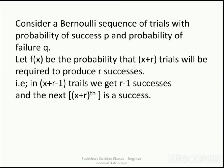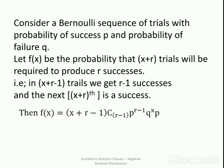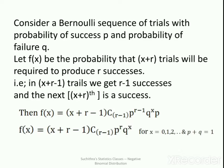That is, in x + r − 1 trials we get r − 1 successes, and the (x + r)-th trial is a success. Then f(x) = (x+r−1 C r−1) · p^(r−1) · q^x · p. Therefore f(x) = (x+r−1 C r−1) · p^r · q^x, for x = 0, 1, 2, … and p + q = 1.